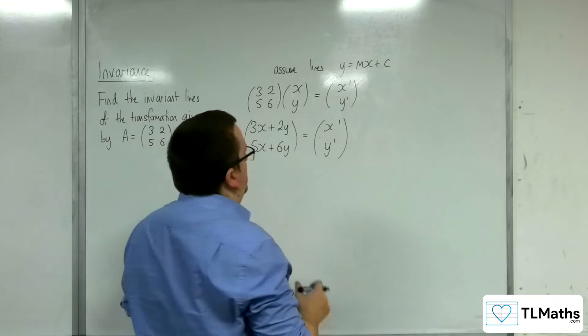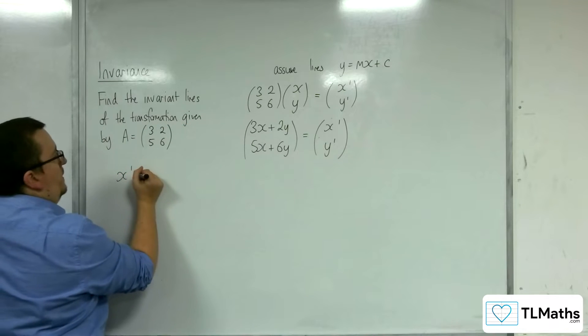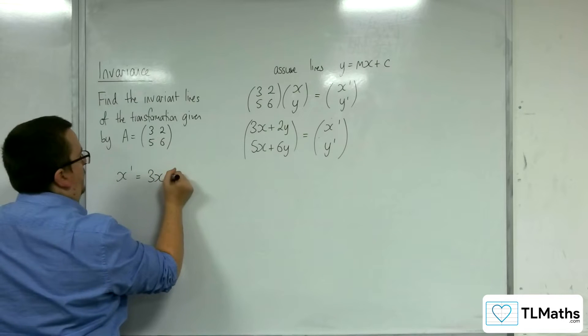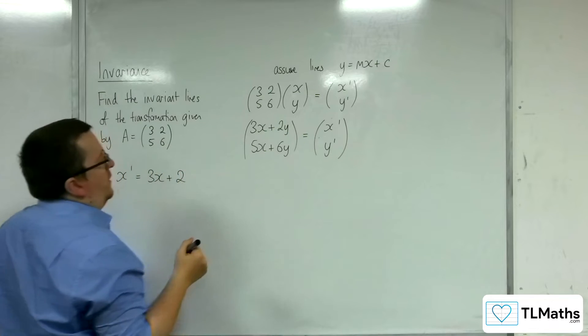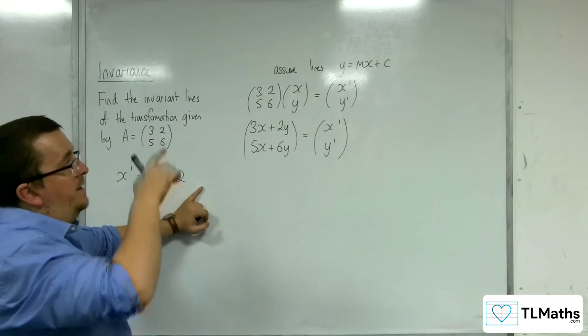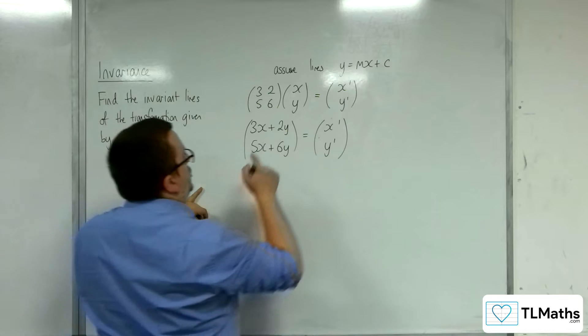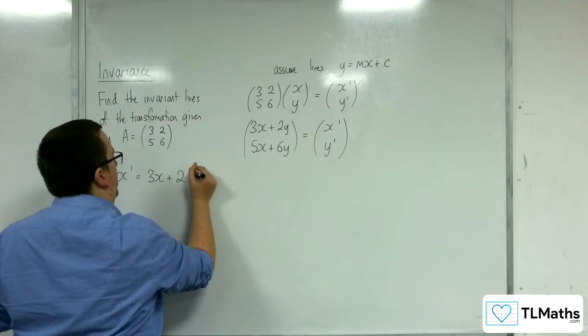Now what I can then do is I can just look at the top row. So x prime is equal to 3x plus 2y. And I know that the y, because remember the line is y is equal to mx plus c, so I can substitute the y for mx plus c here.